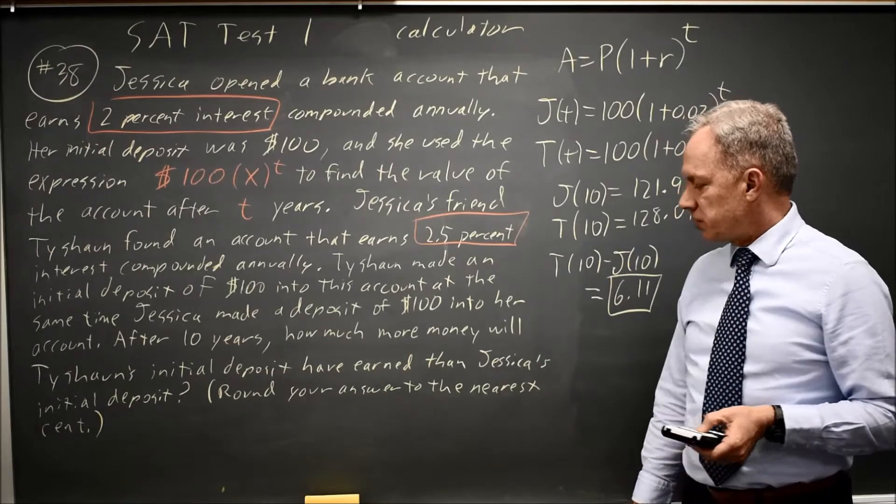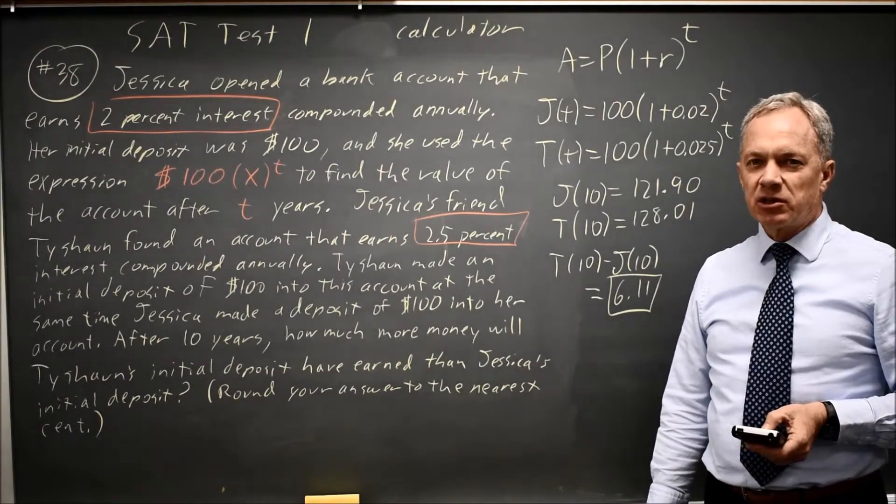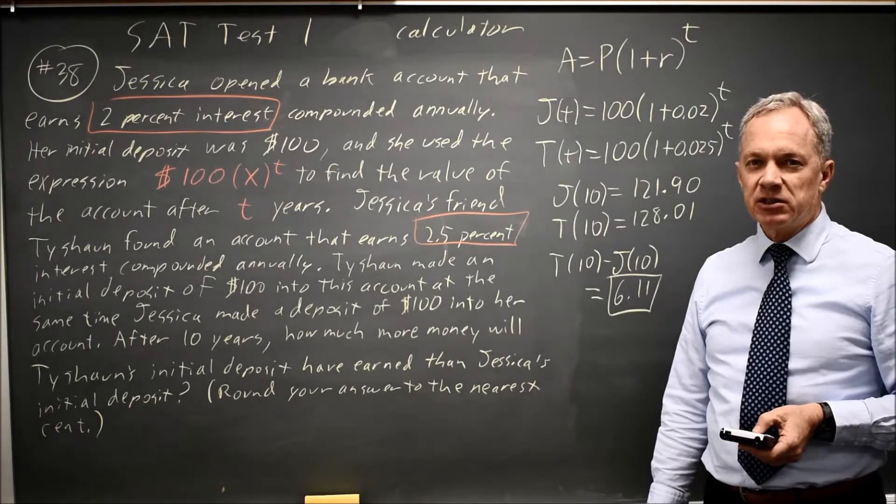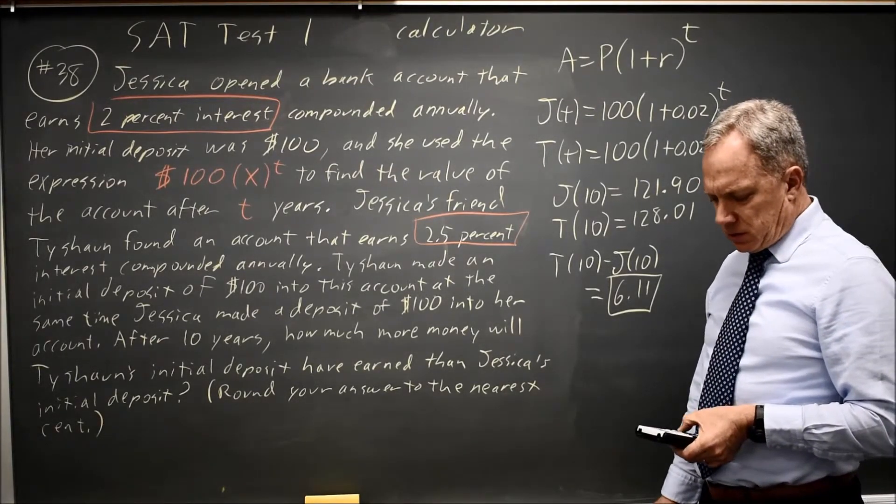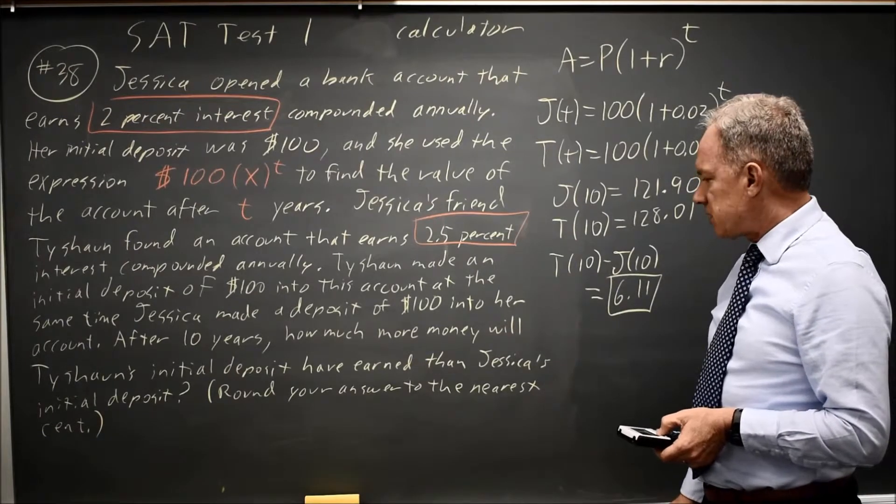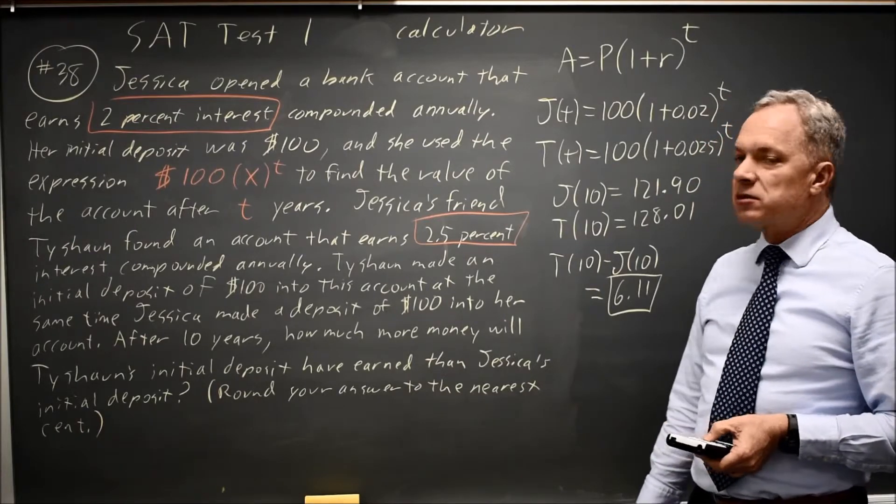They say grid to the nearest cent, not round down on cents, which some people are taught to do. They say nearest cent, so we do nearest cent. And $6.11, and that would be the answer.